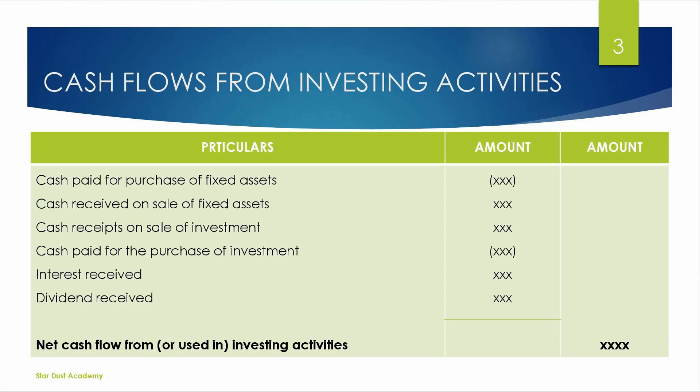The cash paid for purchase of fixed assets — when we purchase fixed assets, we receive a minus figure. The cash receipt from sale of fixed assets is positive. When we sell fixed assets, it is a cash inflow. Cash receipt on sale of investment — when an investment is sold, we receive the investment price and the cash receipt is positive.